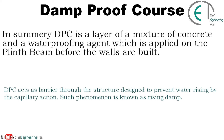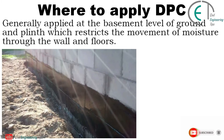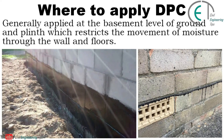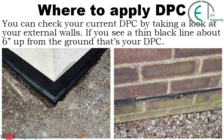In summary, DPC is a layer of a mixture of concrete and a waterproofing agent which is applied on the plinth beam before the walls are built. DPC acts as a barrier through the structure, designed to prevent water rising by capillary action — such a phenomenon is known as rising damp. DPC is generally applied at the basement level of the ground and plinth, which restricts the movement of moisture through walls and floors.